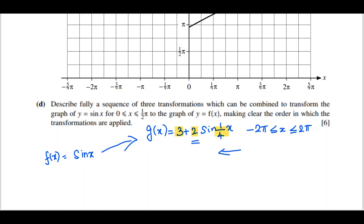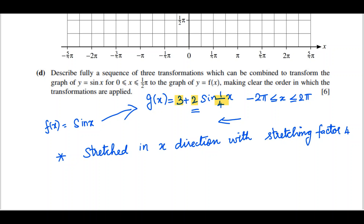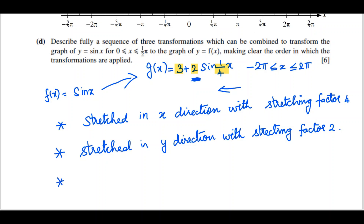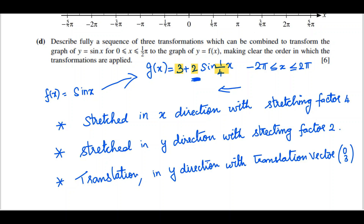So the sequence of transformations is: first, a stretch in the x-direction with stretching factor 4; second, a stretch in the y-direction with stretching factor 2; third, a translation in the y-direction with translation vector (0, 3).